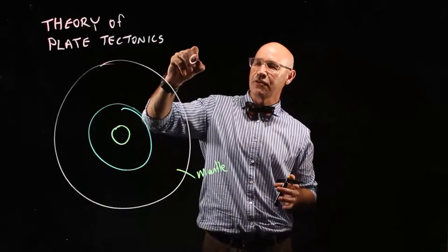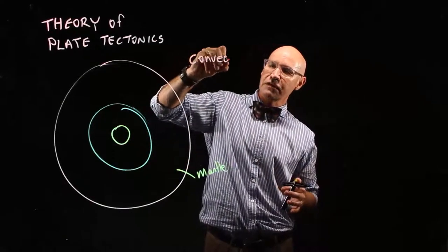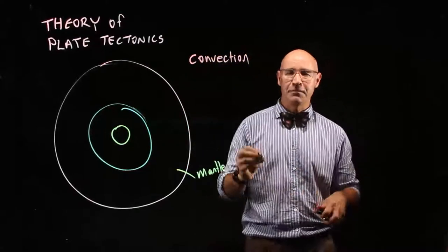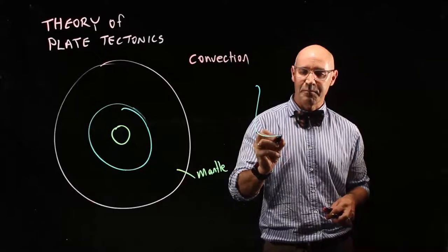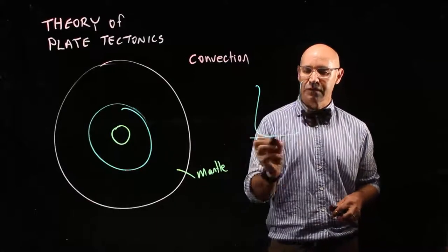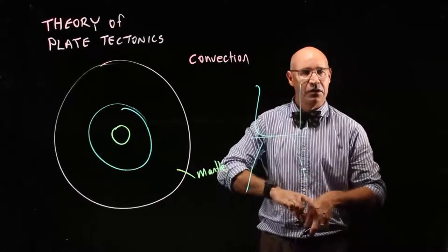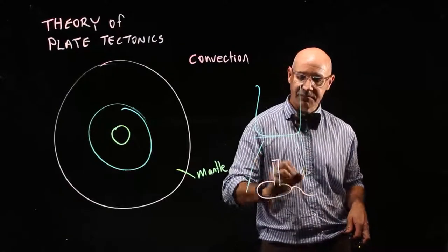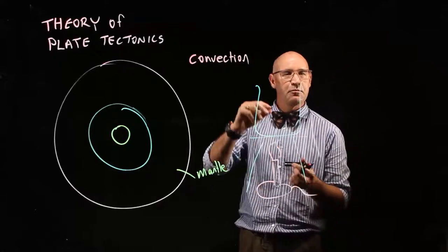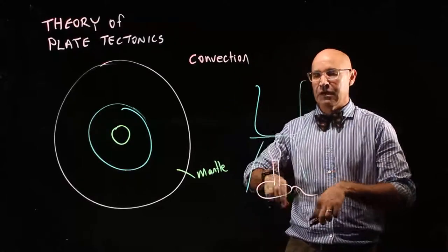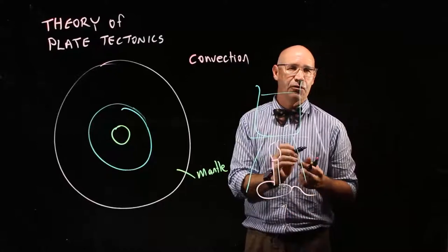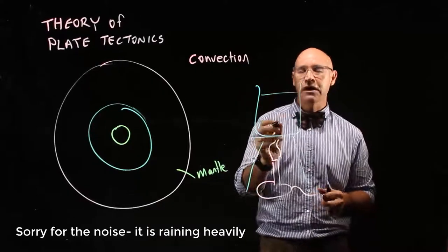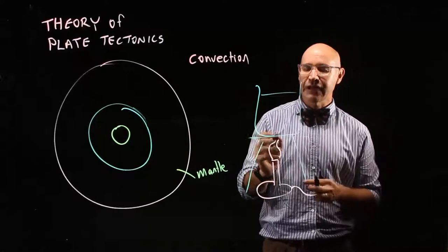I need you to remember this concept called convection and convection currents. So an experiment you might have done before involved a beaker that you heated up using a Bunsen burner and a flame. Now, if you put some grains of maybe tea leaves or something you can see, or even if it was just a food dye,